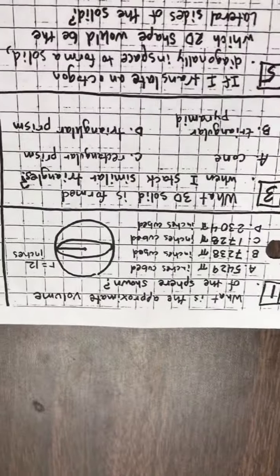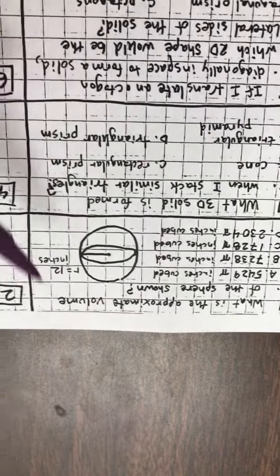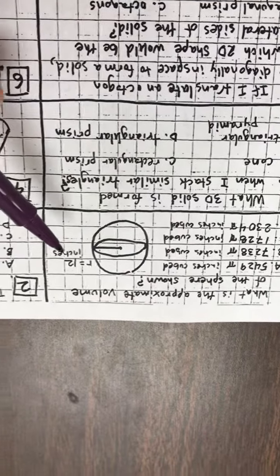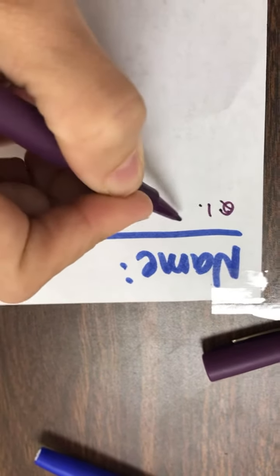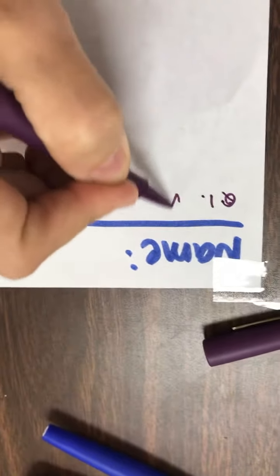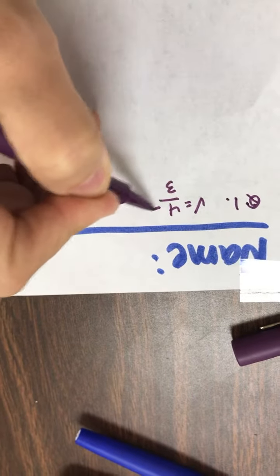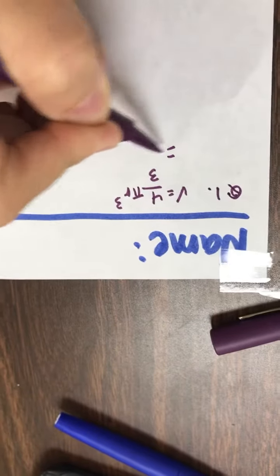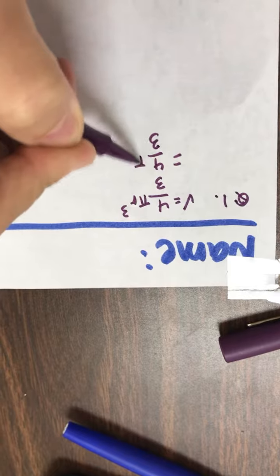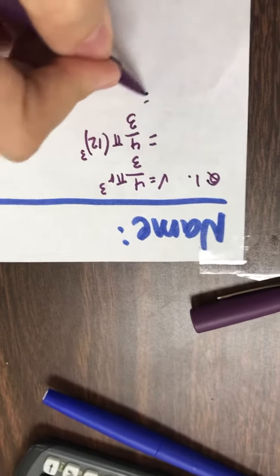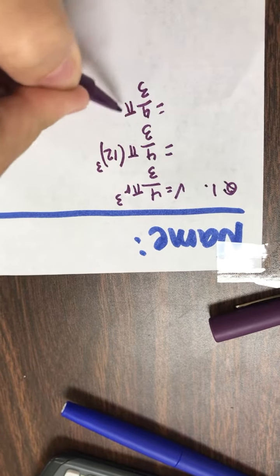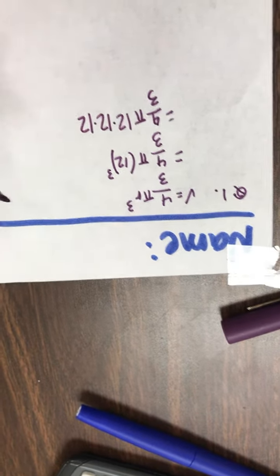So let's do the first question here. It says, what is the approximate volume of a sphere with a radius of 12 inches? So question number one. The volume of a sphere is 4/3 π r³. So let's just do that. 12 to the power of 3. That's the same thing as 4/3 times π times 12 times 12 times 12. That's what that means.